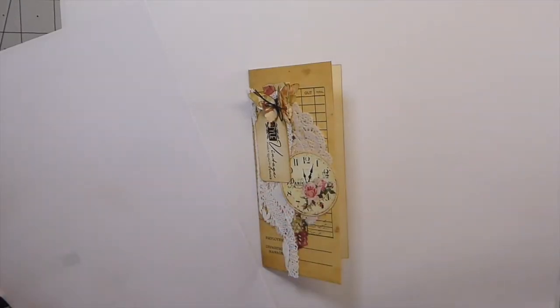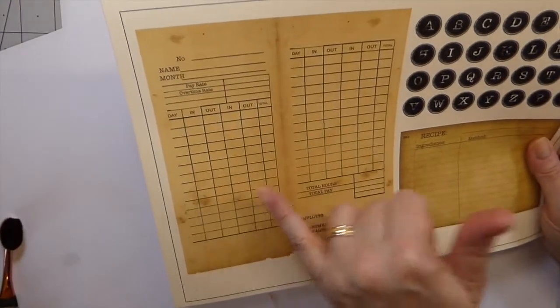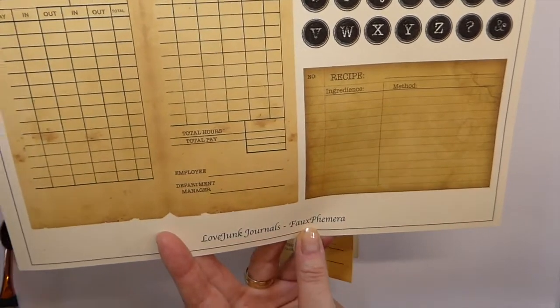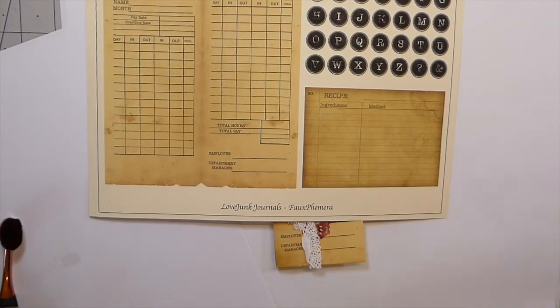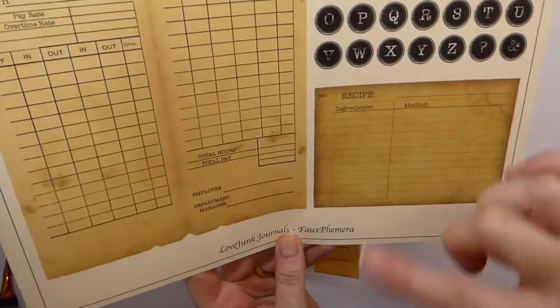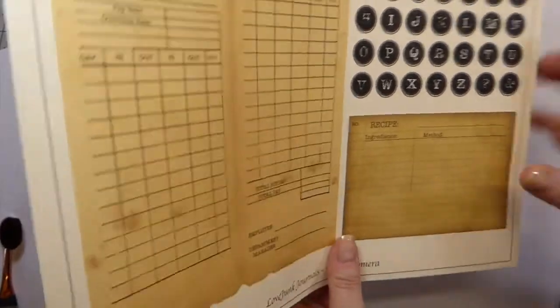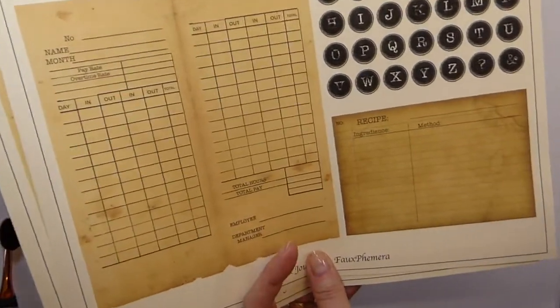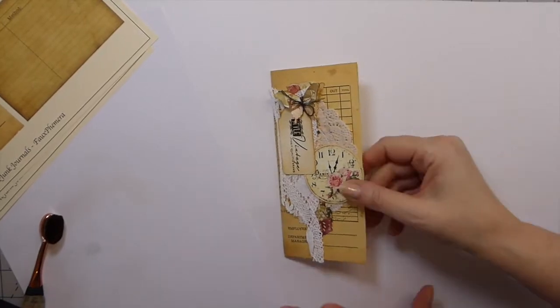Good morning fireflies, welcome back. Today I thought we would play around with creating some ephemera from faux ephemera that we purchase online. This just happens to be the faux ephemera kit from Love Junk Journals. You guys are probably all familiar with Tracy, she does beautiful ephemera and little tiny things to embellish with along with journal kits. Today I just thought it would be kind of fun because sometimes we buy these things and they just kind of get shoved in the back and we forget what to do with them.